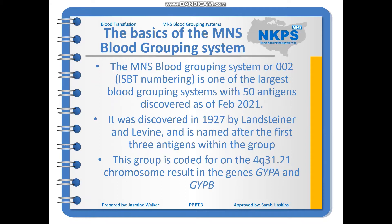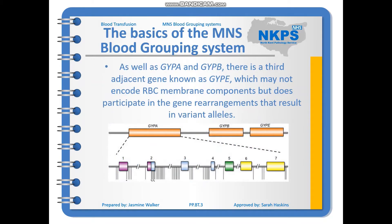This group is coded for on the 4Q31.21 chromosome, by the genes GYPA and GYPB. There is also a third adjacent gene known as GYPE, which may not encode red blood cell membrane components, but does participate in the gene rearrangements that result in variant alleles. Although it doesn't directly code for the different antigens, when it changes, it can cause changes in the antigens coded for by GYPA and GYPB.